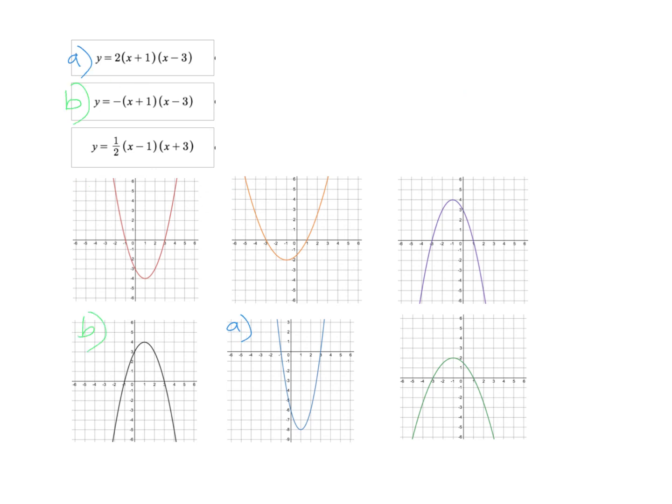Now we have one final equation left. You can see here A is one half. And when A is a half, that's a positive number. So we know the graph is gonna open up. That means we can eliminate the two that open down, the purple and the green. And now we only have it between the red one and the orange one.